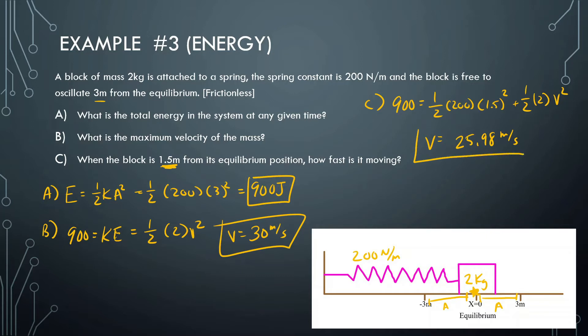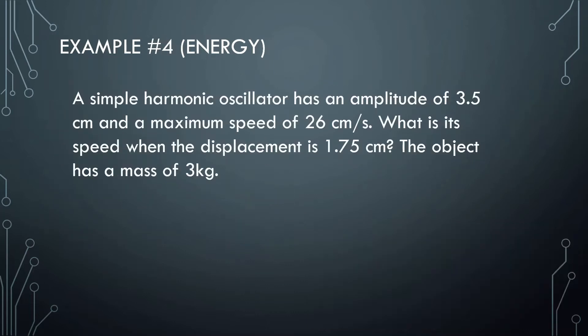So that's the basics of energy. We're going to do some harder problems, but that's the basics of how we're going to do all this. This next problem is a bit more complicated, but we'll take it step by step. A simple harmonic oscillator has an amplitude of 3.5 centimeters and a maximum speed of 26 centimeters per second. What is the speed when the displacement is 1.5 centimeters? The object has a mass of 3 kilograms.